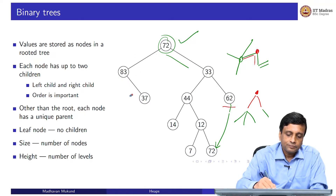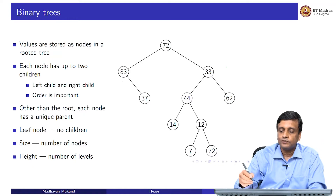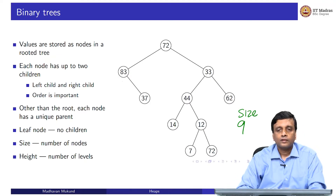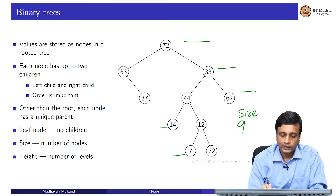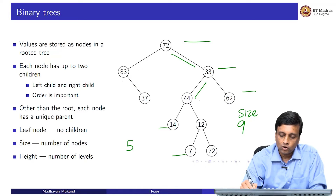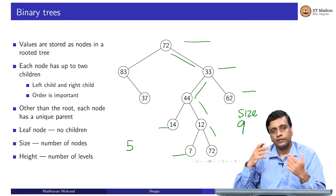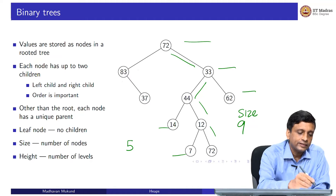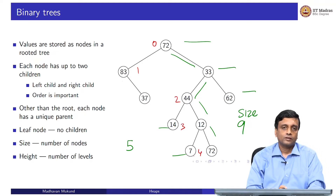There are two quantities of interest: the size, which is the total number of nodes (in this example, 9 nodes), and the height, which is the number of levels. This tree has 5 levels numbered 0 through 4, so the height is 4 or 5 depending on whether you count edges or levels. Conventionally, levels are numbered starting from 0.